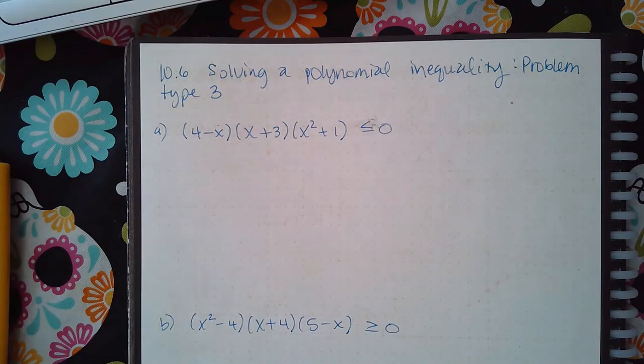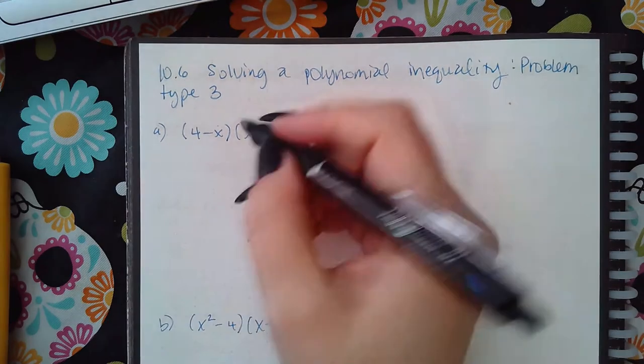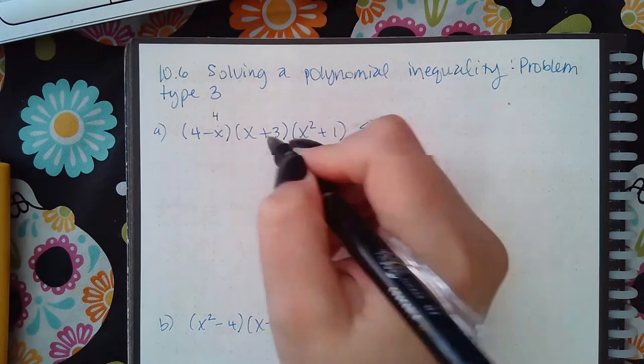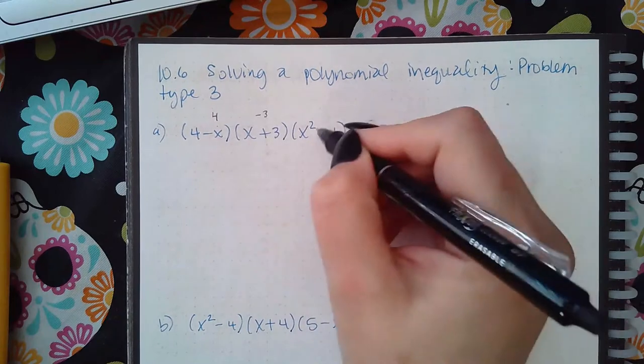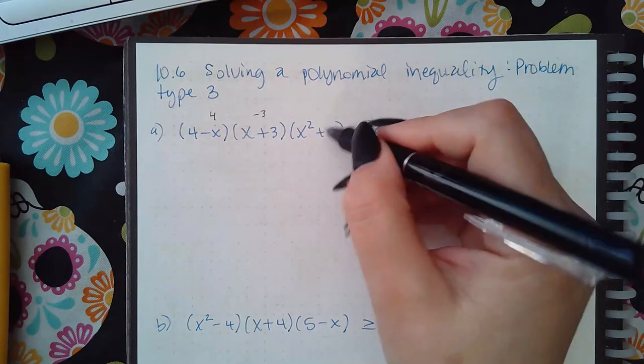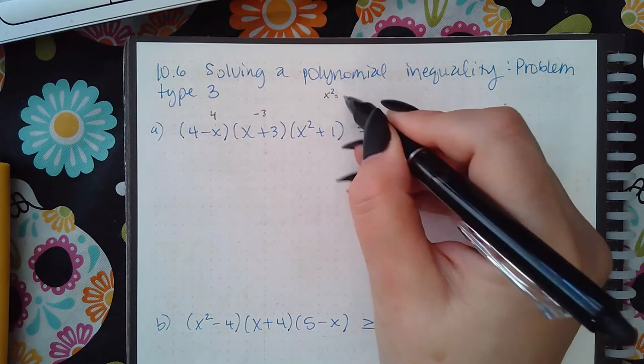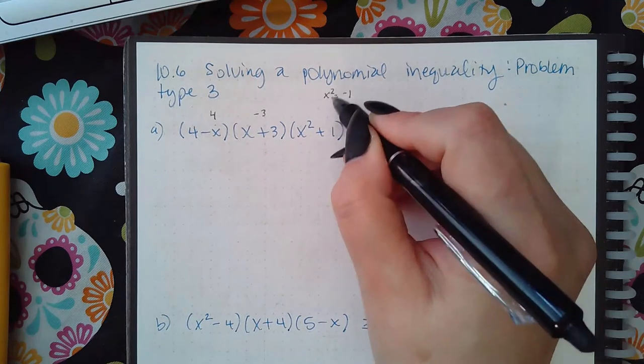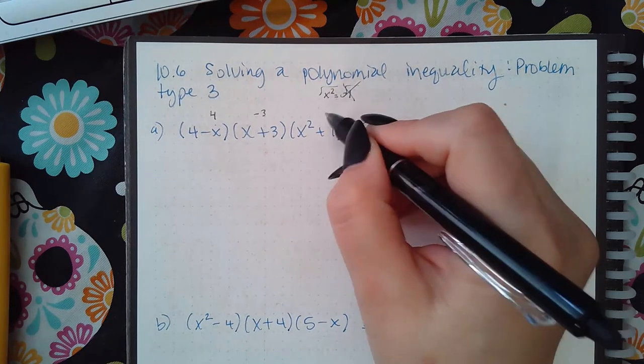Here we have solving a polynomial inequality problem type 3. So again, set this factor equal to 0, you get 4. This one you get negative 3. And this one actually don't get any x values because you get x squared equal to negative 1, and you can't take the square root of a negative value.